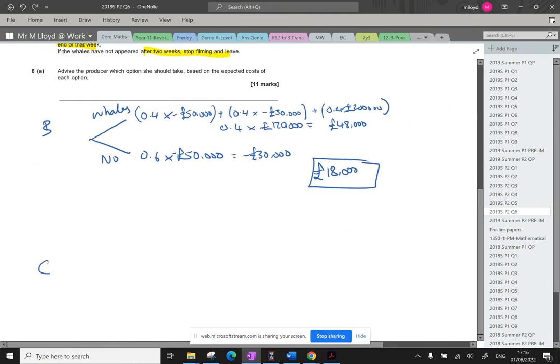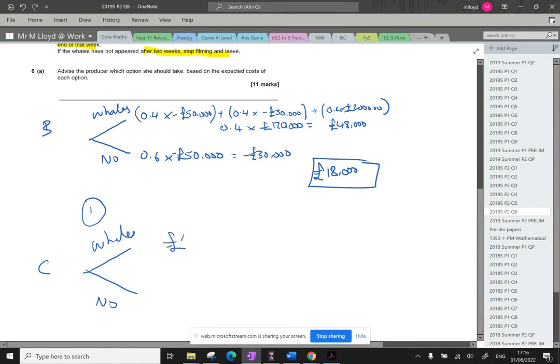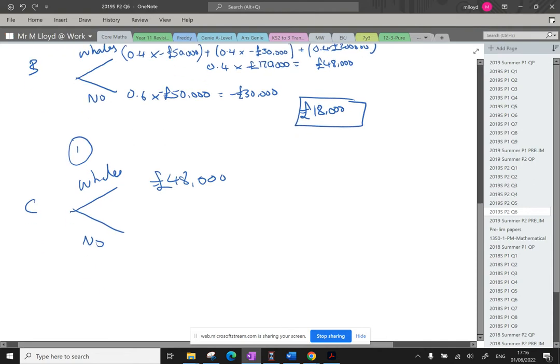For C, I'm going to need a bigger diagram. Week one, whales will appear or they won't appear. And if the whales appear, as you can see above, 0.4 times by negative 50, blah blah blah, we're going to get £48,000 of expected cost there. If they don't appear, now this is another scenario. We go into here where they'll appear in week two.